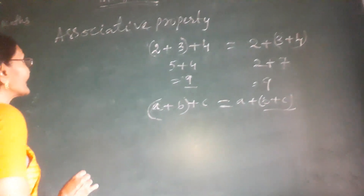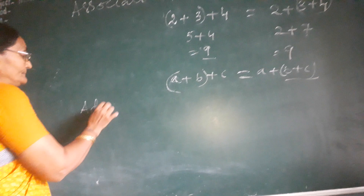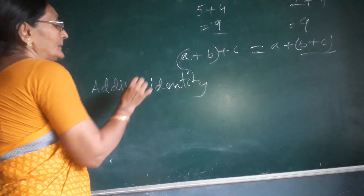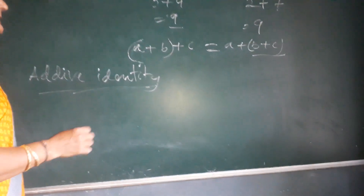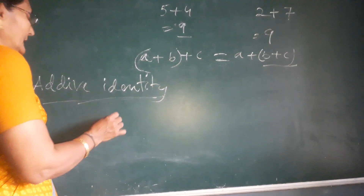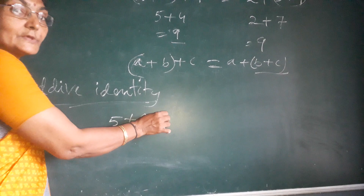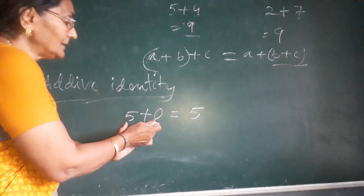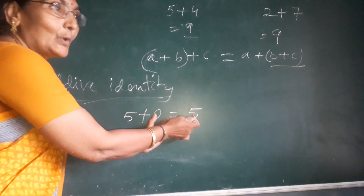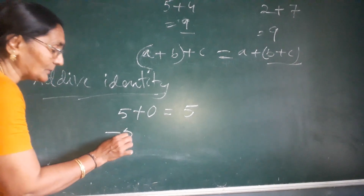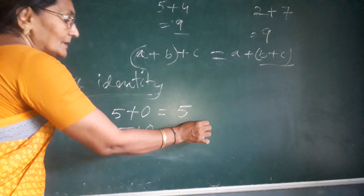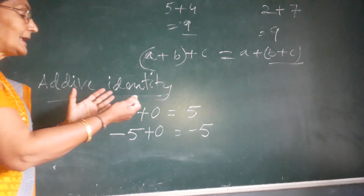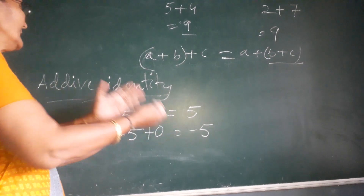The fourth property is additive identity. What is additive identity? That is zero. If any integer is added with zero, the answer will be the integer itself. For example, five plus zero equals five. If the integer is negative and you add zero, the answer will be that same negative number. So if any integer is added with zero, the integer remains — that is the additive identity.